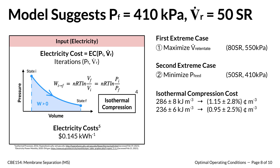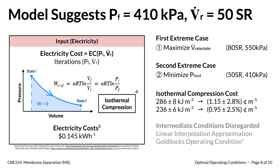Using this equation, we determined the electricity cost of two extreme cases within the possible operating conditions. The first extreme case maximizes the product flow rate, requiring the maximum feed pressure the membrane can withstand. The second extreme case minimizes feed pressure while still producing 95% gas purity. Considering industrial electricity costs in California, the second extreme operating case has an operating cost of 0.95 cents per cubic meter of nitrogen gas produced. Since our model is not very sophisticated, it would be difficult to determine the efficiency of intermediate conditions.